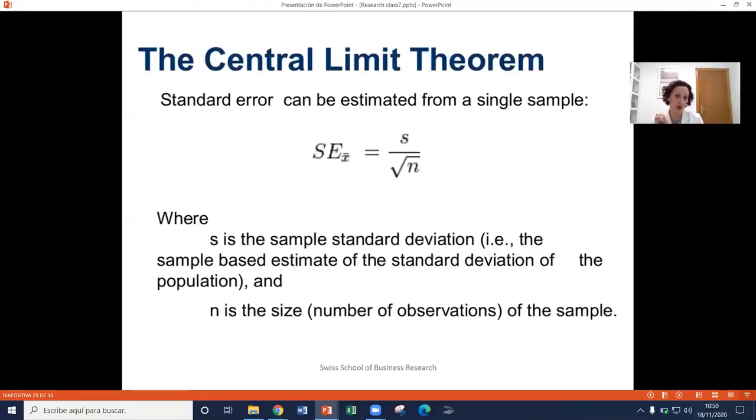And the central limit theorem, which I have introduced in the first video, basically states that standard error can be estimated from a single sample. We don't have to be testing it from all of the different samples that we are taking. So s is the sample standard deviation and n is the size or the number of observations of the sample. You saw in this video that we have to think of how many observations that we've done of the sample and use that when we are calculating the standard error. And in this central limit theorem, we are including the sample standard deviation and also the number of observations of the sample.